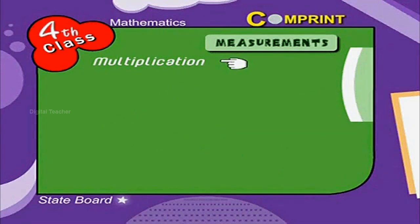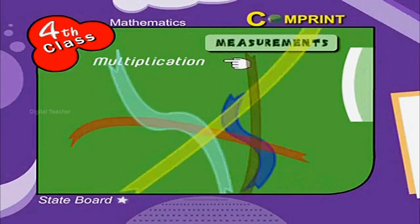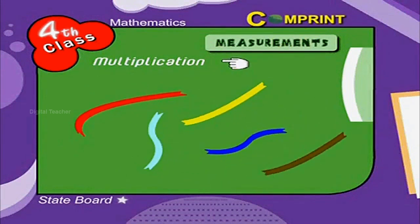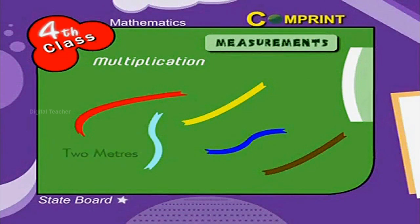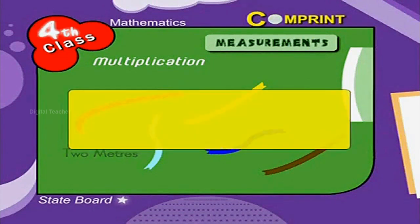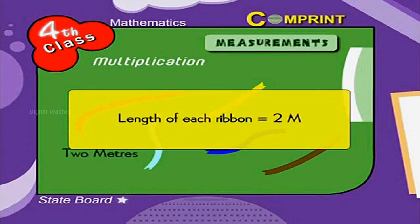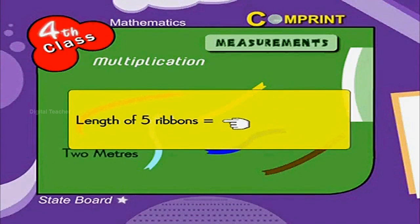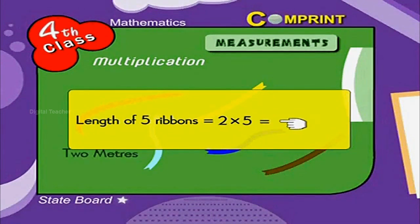Multiplication: Take 5 pieces of ribbons, each measuring 2 meters in length. What is the total length of all the ribbons? Here is the solution. Length of each ribbon is equal to 2 meters. 2 meters multiplied by 5 is equal to 10 meters.